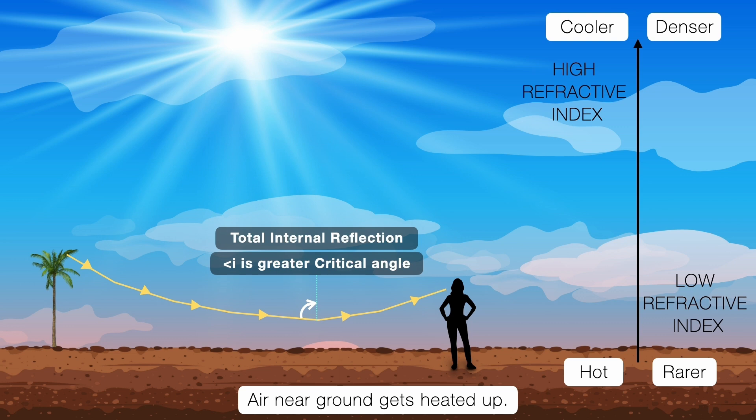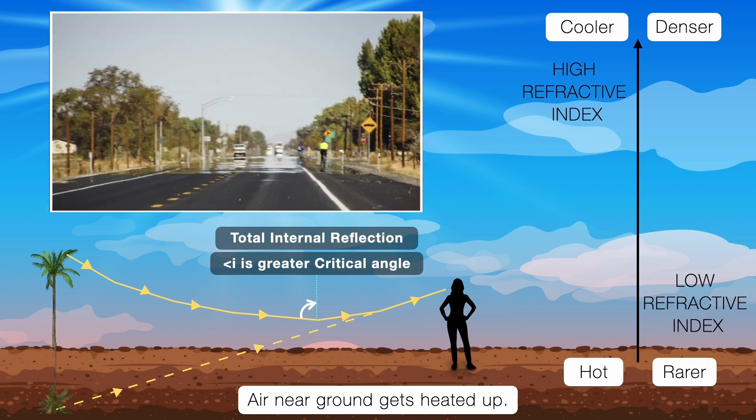Now here is the fun part. Our brain always assumes light travels in straight lines. So when these curved rays reach the eye, the brain extends them backward in a straight path. And what does it see? It sees the light as if it's coming from the ground. That's why the observer sees what looks like a reflection of the tree on the road. And when we see reflection on the ground, what does our brain instantly believe? That there is water there. That's the trick of the mirage.